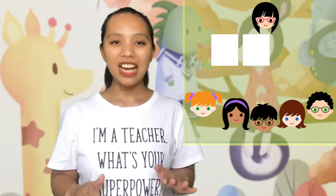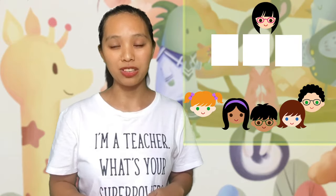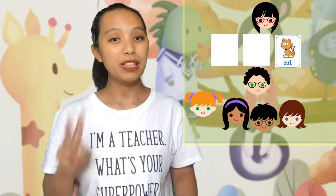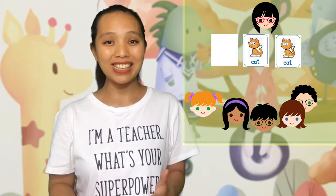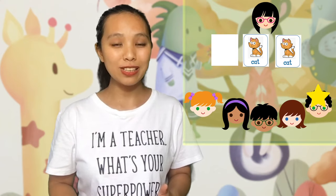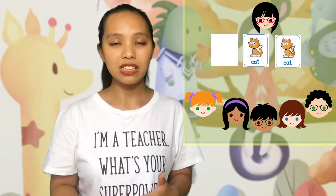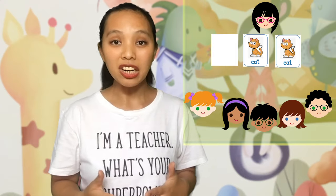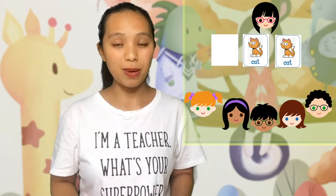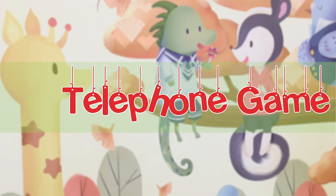Game 1 — Memory Match: Put the flashcards on the floor or on the table facing down. Students take turns to flip two flashcards. If the flashcards are of the correct pair, you can reward the student and leave the flashcards facing up. If the cards are not a correct pair, the student flips the cards back.